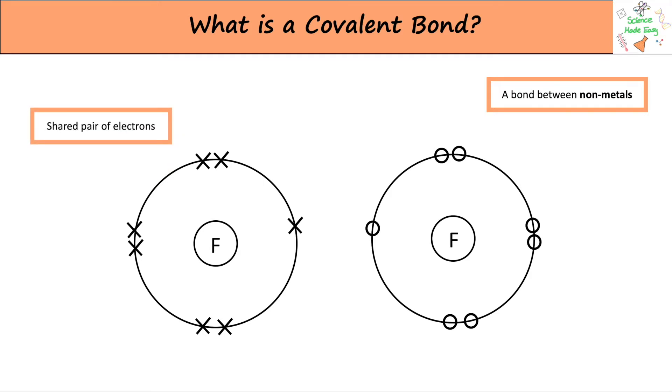Atoms want to have a full outer shell, so this means two electrons in the first shell and eight electrons in the others. They want this so they can become stable, so they react with other atoms to get this.